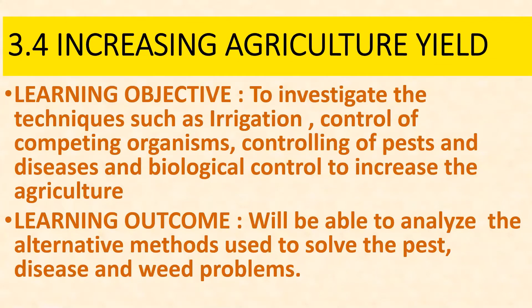Hi everyone. Today we will be learning the various techniques such as irrigation, control of competing organisms, controlling of pests and diseases, and biological control to increase agricultural yield. By the end of the lesson you will be able to analyze the alternative methods used to solve the pests, disease and weed problems.